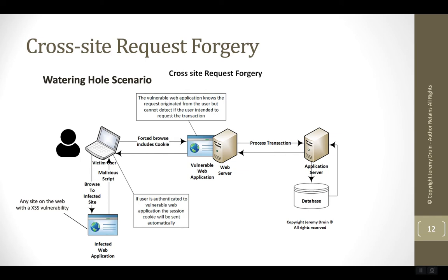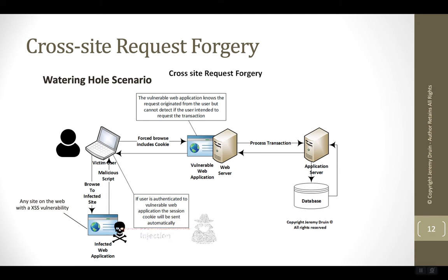In a watering hole scenario, the user browses to a malicious website — maybe a forum with a cross-site script embedded in it. Several popular sites over the years have been victims of cross-site scripting attacks. The user arrives at one of these places and trips across the malicious script, causing their browser to go out to a malicious site. The hacker injects a cross-site script into a benign but vulnerable web application. These are typically persistent cross-site scripts stored in a database — sometimes called stored cross-site scripts. The user visits the infected website, the script executes in that domain, and tells the user's browser to go visit the site vulnerable to the request forgery.